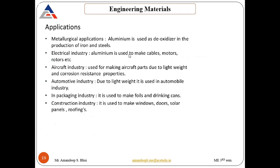Applications of aluminum: in metallurgy, it is used as a de-oxidizer in the production of iron and steel. In the electrical industry, it is used to make cables, motors and rotors. In the aircraft and automotive industry, it is used in the form of aluminum alloys because it is corrosion resistant, lighter in weight, and provides strength equivalent to ferrous metals. In packaging, it is used to make foils and tin cans. In construction, windows, doors, solar panels and roofing are made from aluminum.